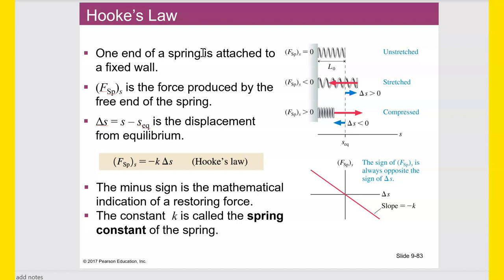Hooke's Law: one end of a spring is attached to a fixed wall. The force of the spring in the S direction, F sub SP with subscript S, means the force of the spring in the S direction — where S is an axis like the X or Y axis. This is the force produced by the free end of the spring, not the end attached to the wall. Delta S, which is S minus S-eq, is the displacement from equilibrium, where S-eq is the position of the spring's end at equilibrium.